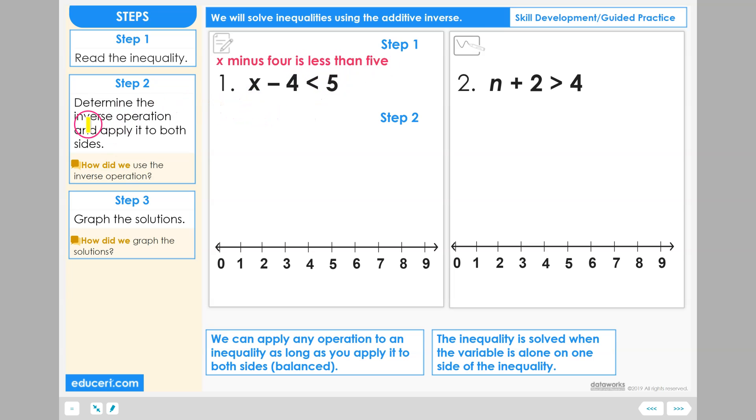Step two. Determine the inverse operation and apply it to both sides. Remember that the inequality is solved when the variable is alone on one side. To get this variable X all alone, we need to get rid of this minus four. The inverse operation to remove minus four will be to add four, and we need to apply to both sides.